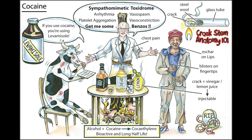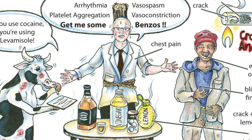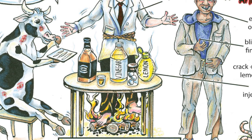This illustration is a summary of some key points of cocaine intoxication and cocaine overdose. In the center of the slide you see the character from the sympathomimetic toxidrome. Cocaine is a sympathomimetic drug that causes tachycardia, chest pain, diaphoresis, dilated pupils, high blood pressure, and normal bowel sounds. It can also cause hyperthermia and hyperreflexia.